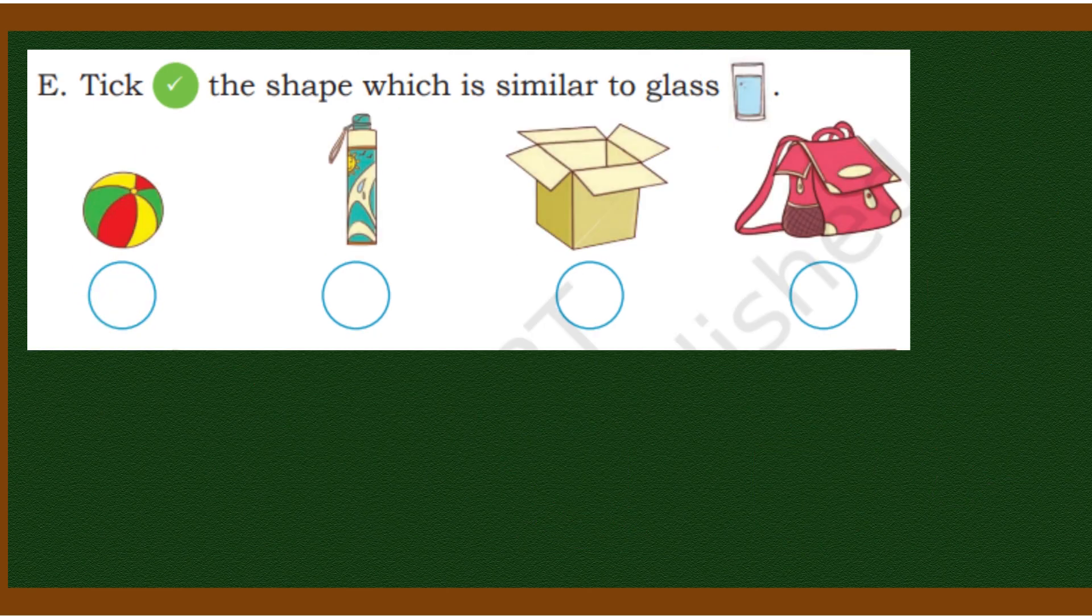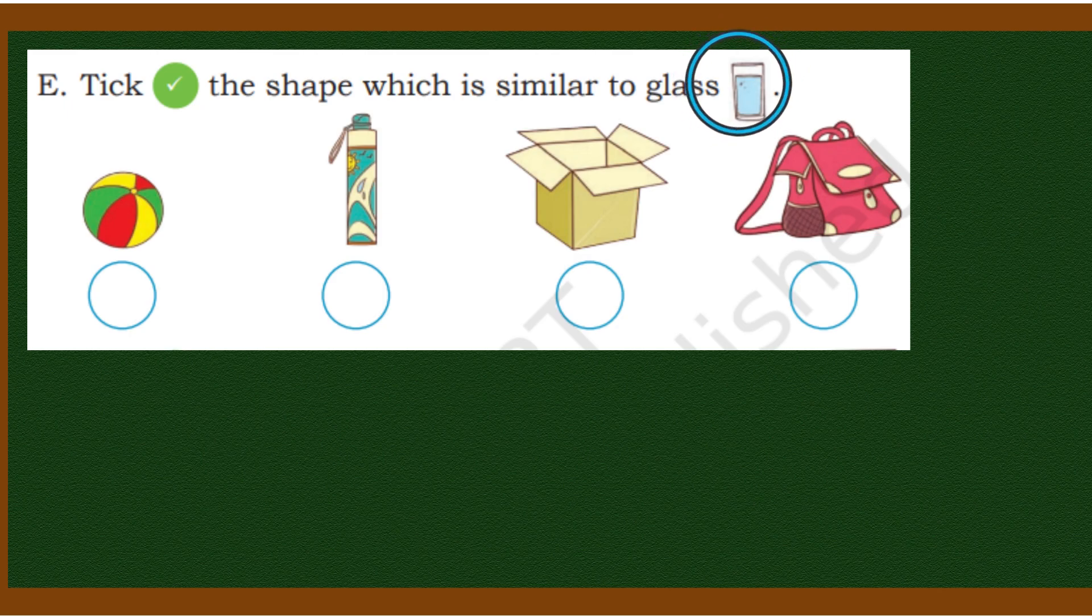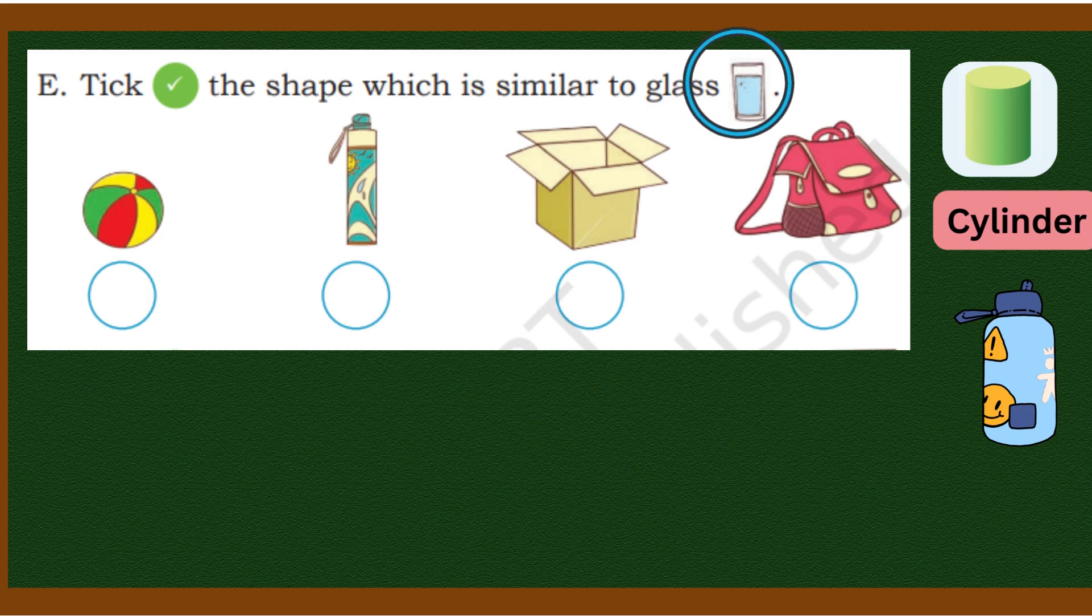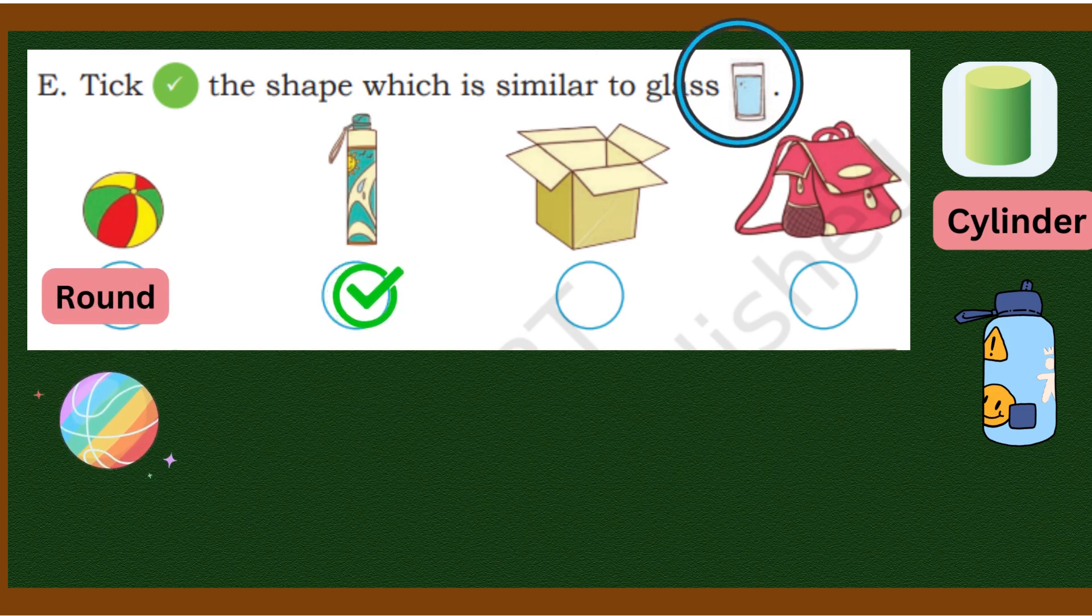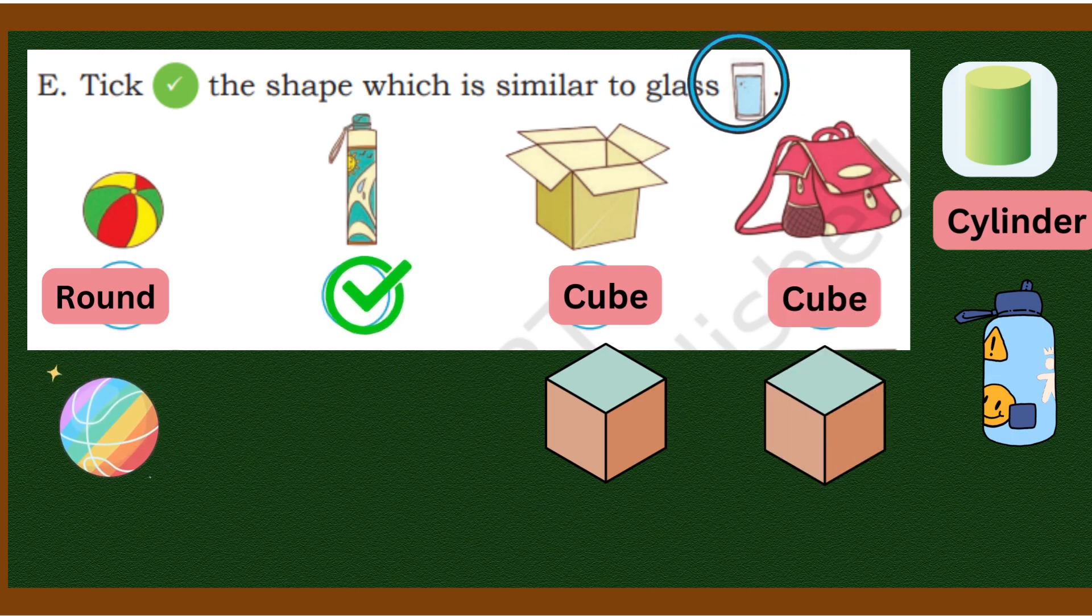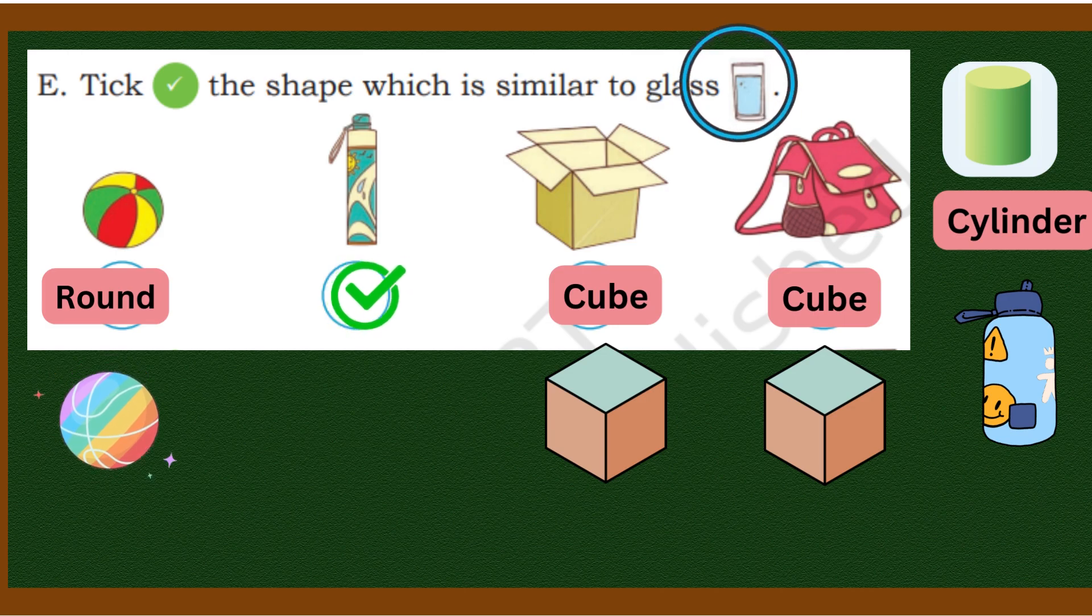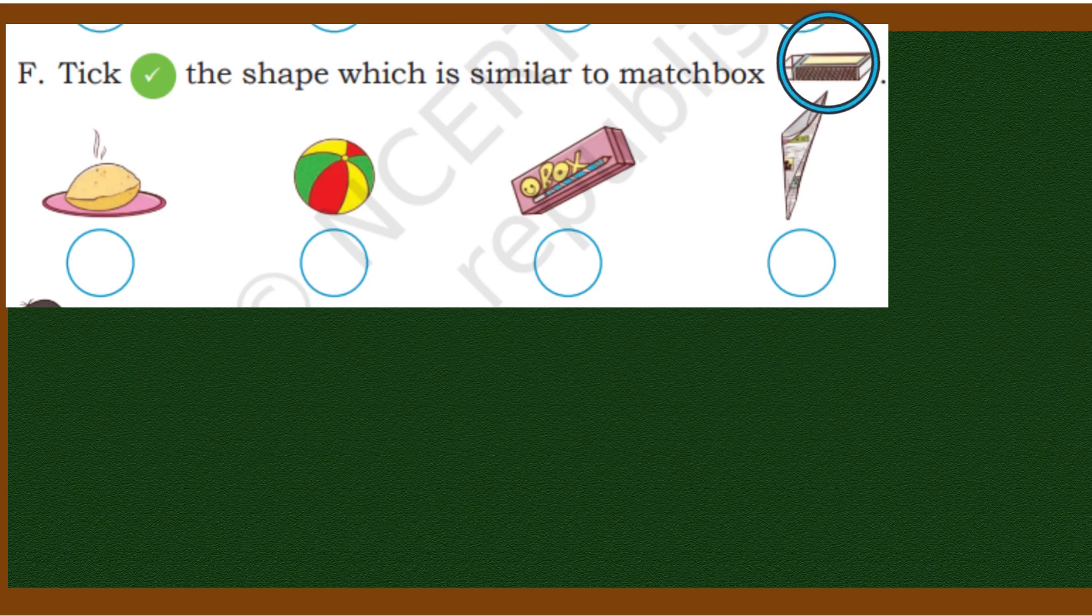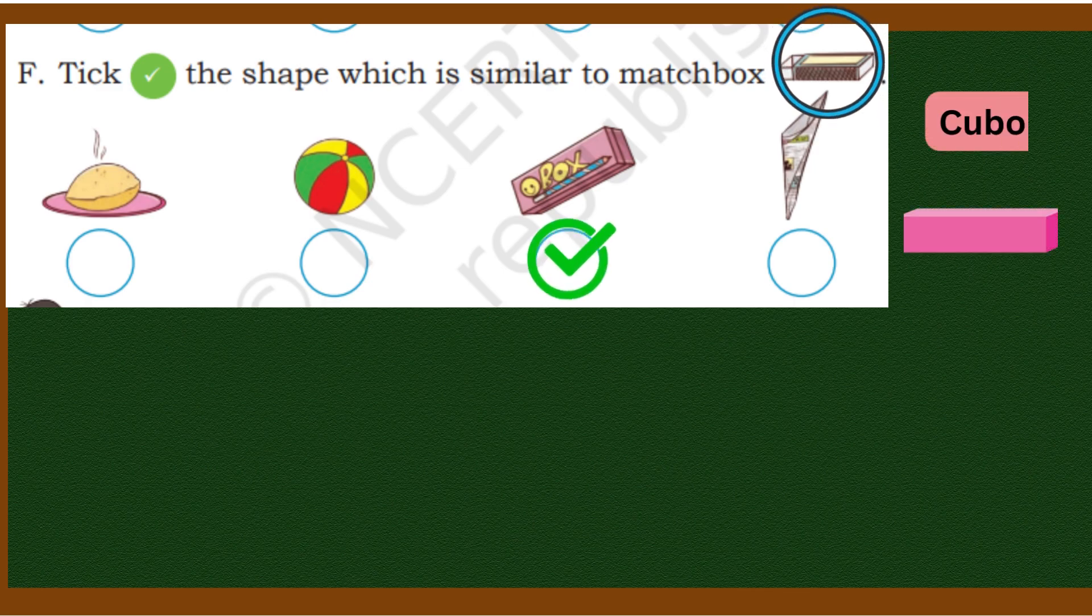Tick the shape which is similar to glass. Glass is of what shape? Cylinder shape. So we have to tick such a shape.